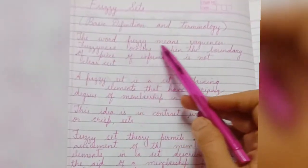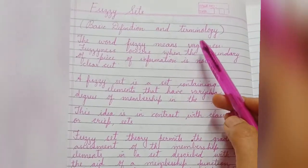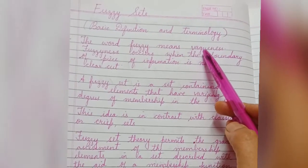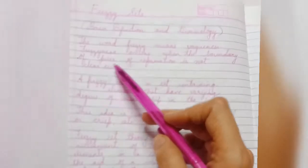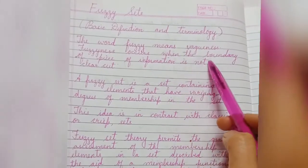The word fuzzy means vagueness, the condition of being unclear. Fuzziness occurs when the boundary of a piece of information is not clear-cut.